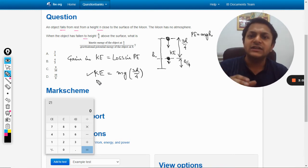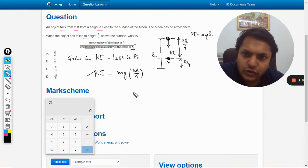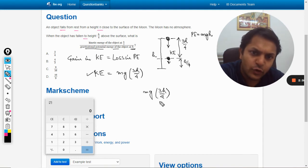What is the gravitational potential energy at the height h? That will be mgh. So the ratio will be kinetic energy, which is mg 3h by 4, divided by mgh. This is coming out to be 3 by 4.